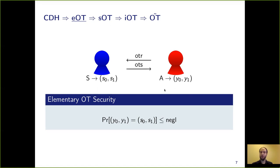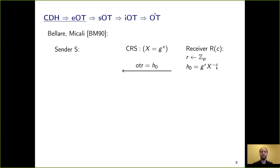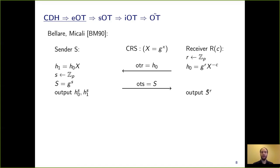But at the same time, this notion is weak enough that we have hope of constructing it from CDH. We use the OT protocol introduced by Bellare and Mikali and show it satisfies elementary OT. We have a sender and a receiver with a common reference string capital X = G to the X. The receiver in the first round samples a random exponent R and defines H0 = G to the R times capital X to the minus C, sending over H0. The sender computes H1 = H0 times capital X, also samples a random exponent, defines capital S = G to the S, and sends over capital S. Finally, the receiver outputs S to the R and the sender outputs two strings H0 to the S and H1 to the S.